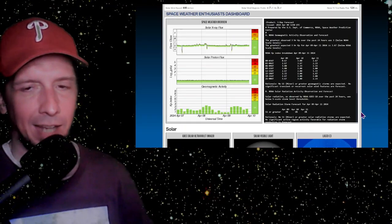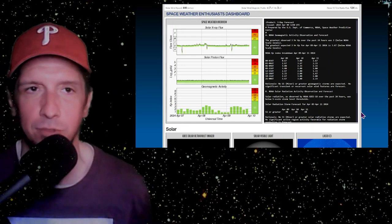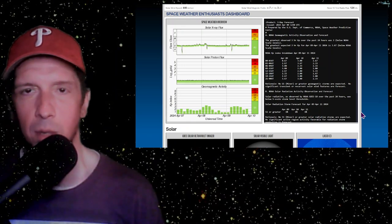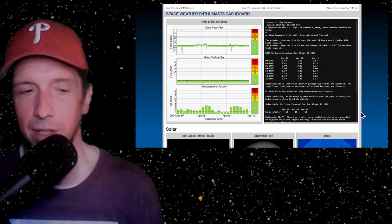Some geomagnetic unrest forecasted for basically right now. It looks like a weak coronal hole high-speed stream is in the forecast. We do have a slightly elevated solar wind here but it's barely anything to even note.